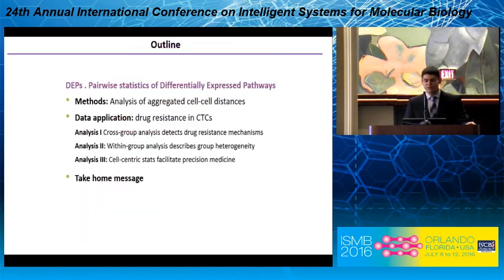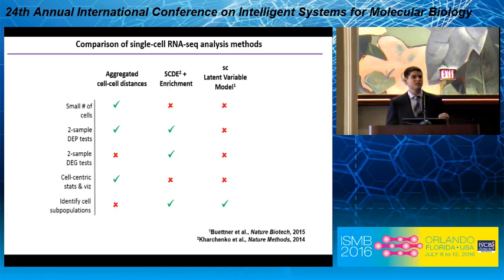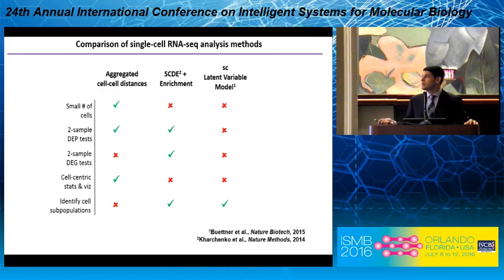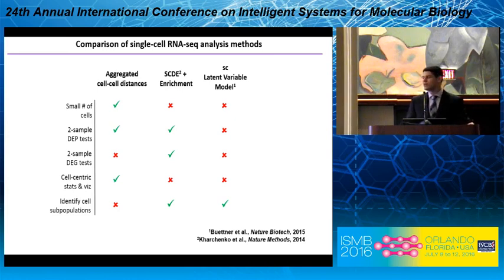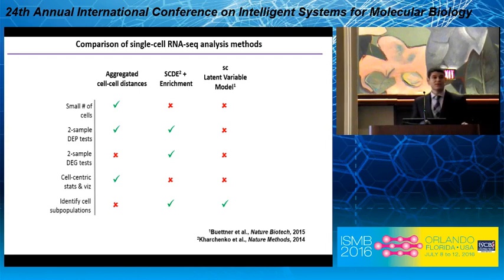The take-home message: aggregated cell-to-cell distances are useful when you have a small number of cells, where many other single-cell RNA-sequencing methods are not. We compute differentially expressed pathway tests, not differentially expressed gene tests — we make no claims at the gene level. And we can drill down to an individual cell for statistics and visualizations at that level of granularity. These other methods are designed for different purposes and do not address what we're trying to accomplish here.